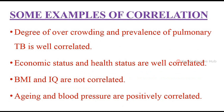Here are some common examples of correlation from the nursing field. The degree of overcrowding and the prevalence of pulmonary TB are well correlated — as overcrowding increases, the chances of getting pulmonary TB also increase. Economic status and health status are well correlated: people with low economic status have poor health status, but as economic status increases, health availability and health status also improve. BMI and IQ are not correlated, as studies show no relationship between them.